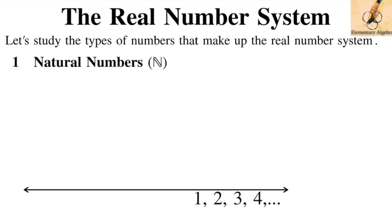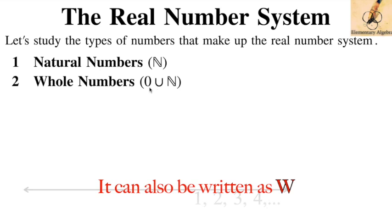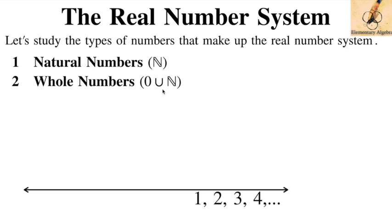The next part of our real number system is the set of whole numbers. The whole numbers are simply your natural numbers with zero. This union symbol means zero is added together with the natural numbers. So that's our whole numbers. This is also known as the set of non-negative integers. This is the first expansion of the natural numbers, which includes zero.